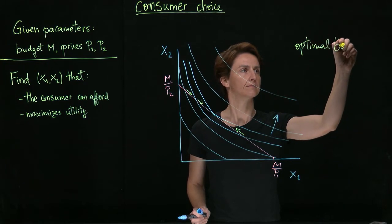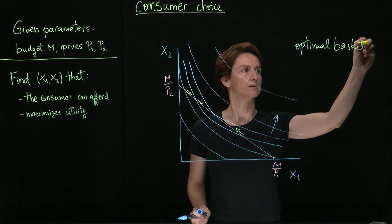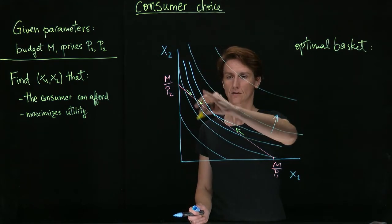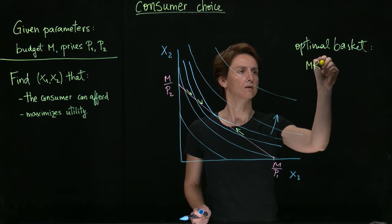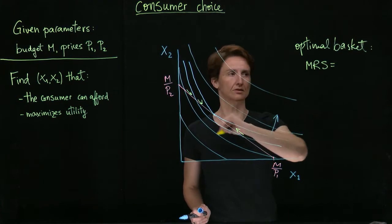And so that is one way of seeing the solution will be at the point where the optimal basket will be where we have a tangency between the indifference curve and the budget constraint.